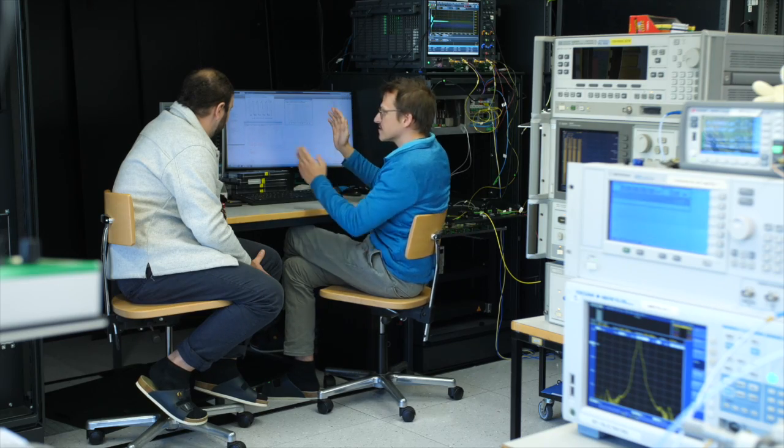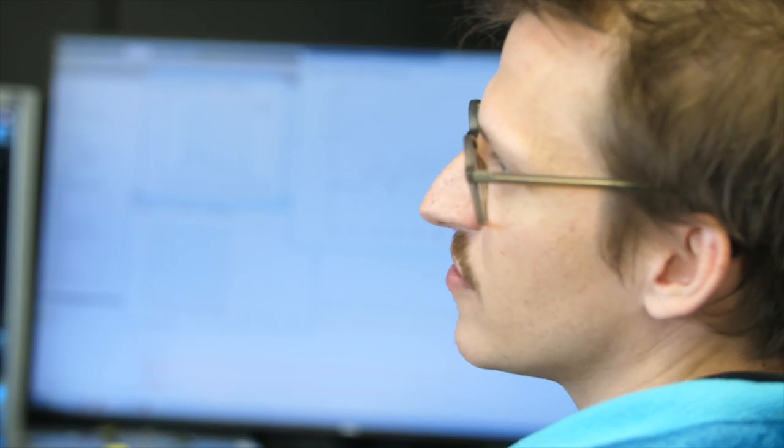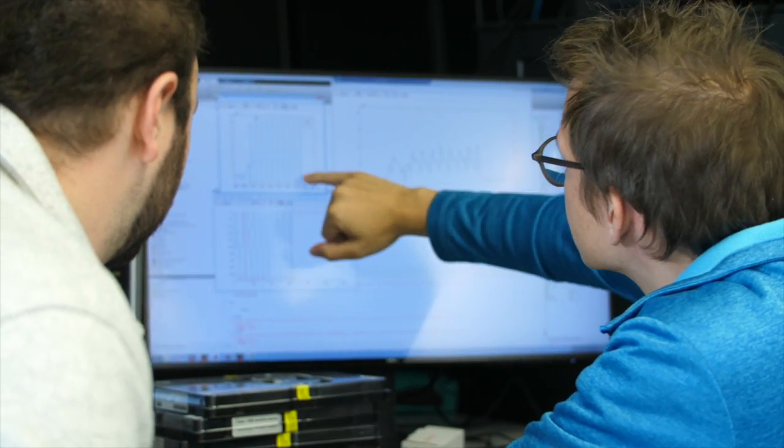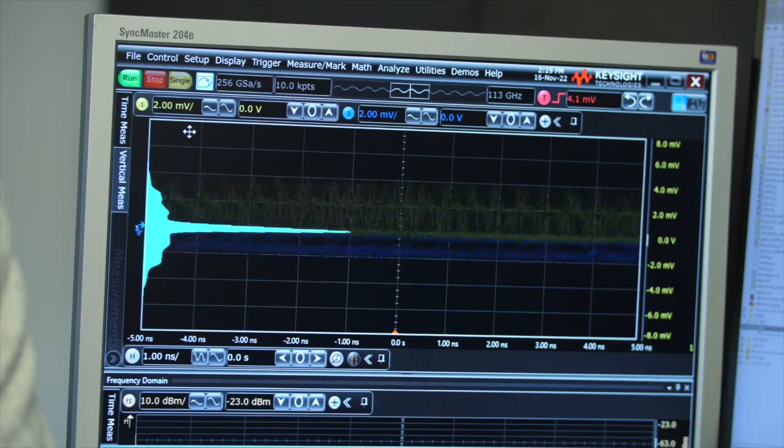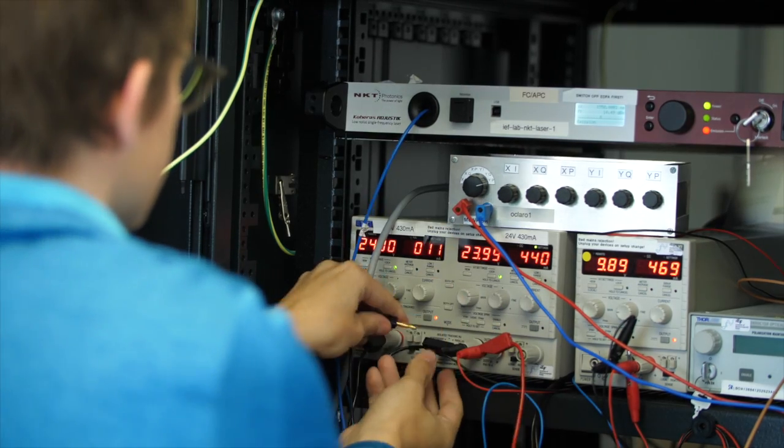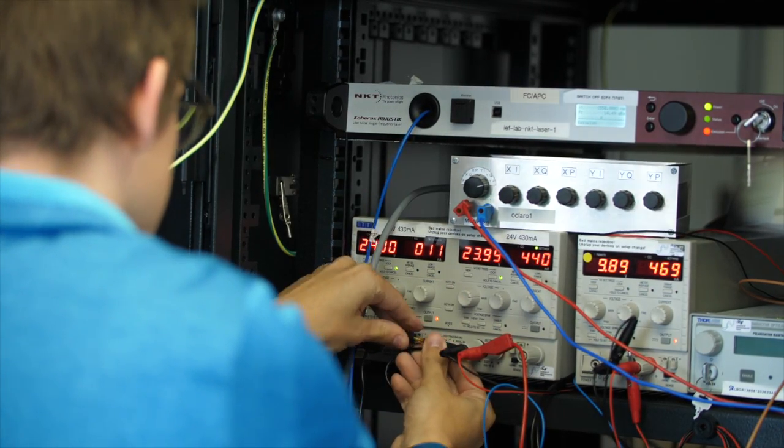In the electronics lab, I measure the components electronically. Here it's more about how reproducible my components are, how uniform they are. At the end, we want to build a small camera. And for this, we need detectors that are as uniform as possible and do not have large deviations from another.